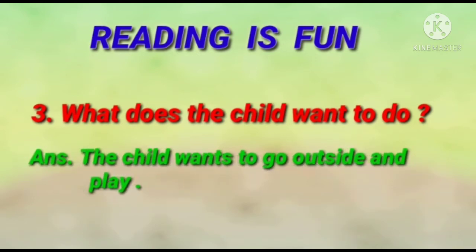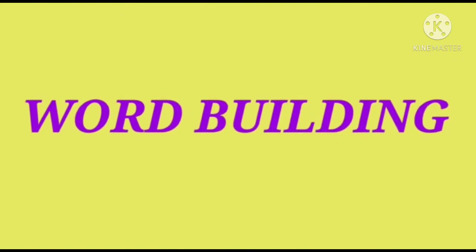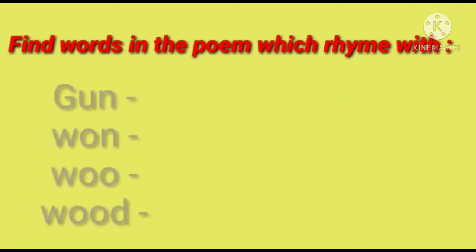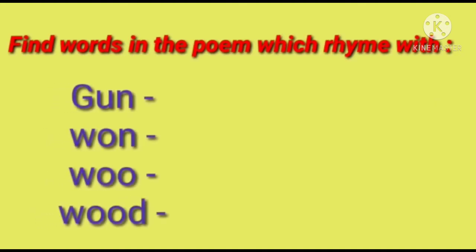Question three: What does the child want to do? The answer is: the child wants to go outside and play. Now let's discuss some word building exercises — find words in the poem which rhyme with: gun, one, who, and put.